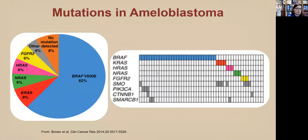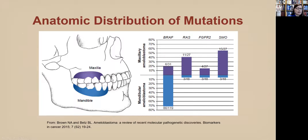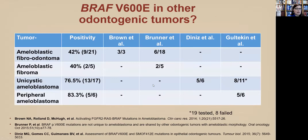BRAF is mutually exclusive with RAS family mutations — patients have one or the other. We used to think patients with maxillary ameloblastomas did worse because it was harder to get negative surgical margins, but now we think it may be because they have a different mutational profile. While BRAF is most common in mandibular ameloblastomas, the most common mutation in maxillary ameloblastomas is actually smoothened, with RAS being the next most common.